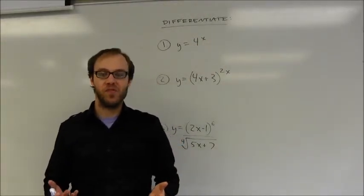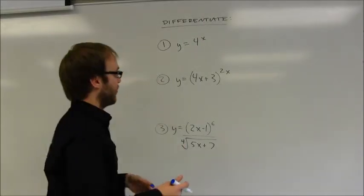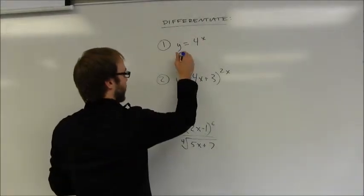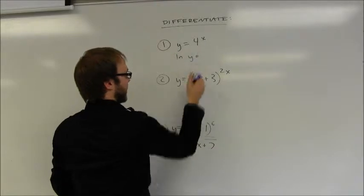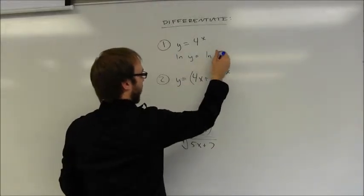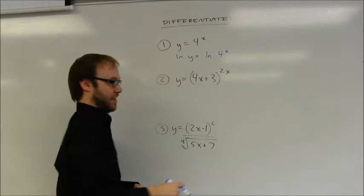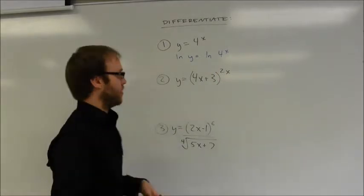Taking the natural log of both sides would give me a way to rewrite this in another form. So I'm going to take the natural log of y and set that equal to the natural log of 4 to the x. Completely legal, those two values are equal, so the natural logs are going to be equal.